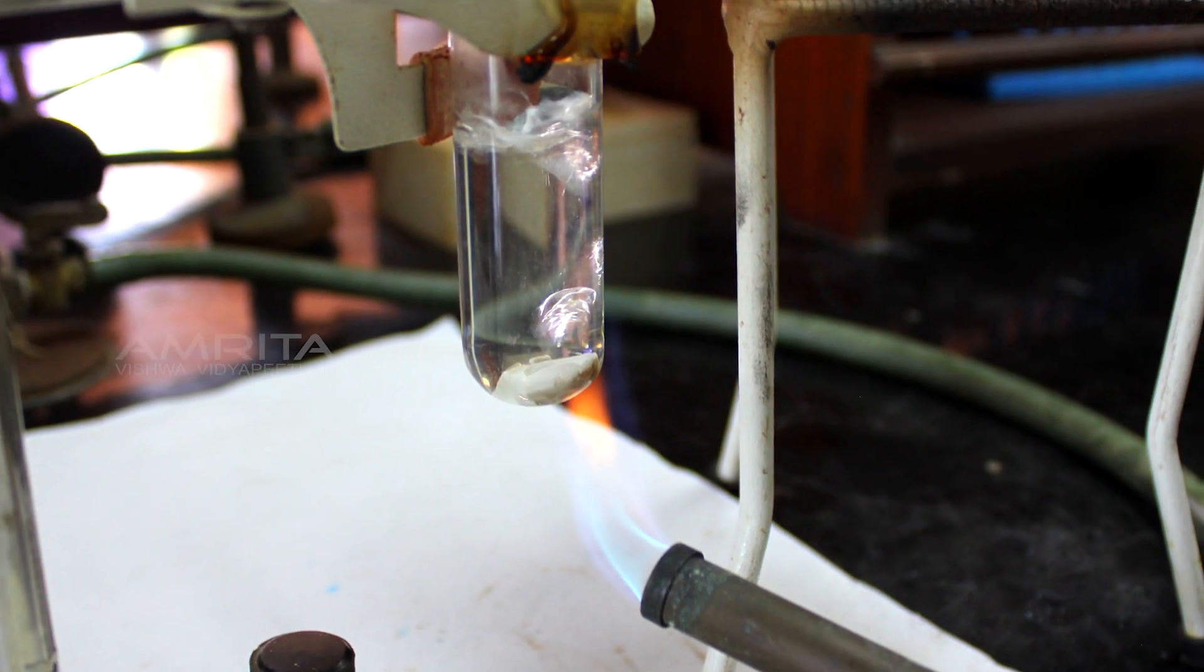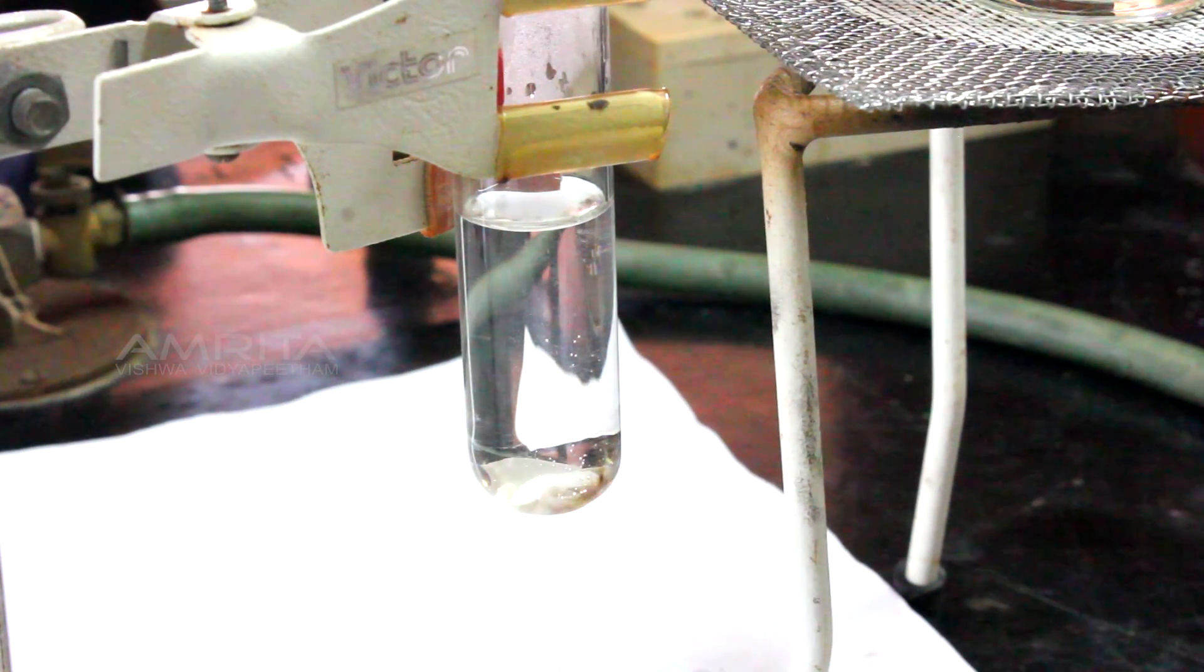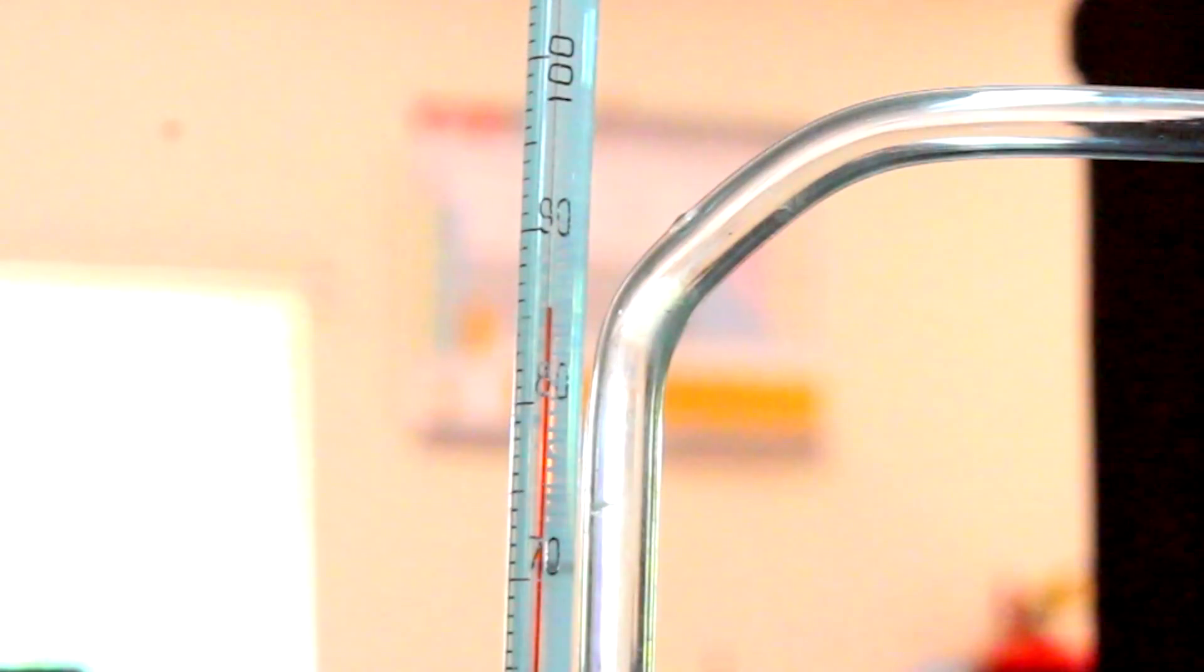Heat the boiling tube by rotating it over the flame of a burner and note down the initial temperature at which the water starts to boil.